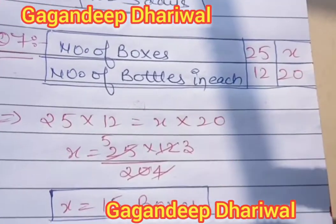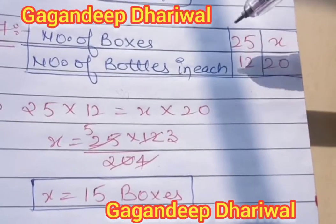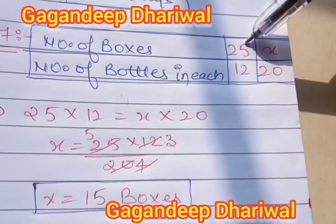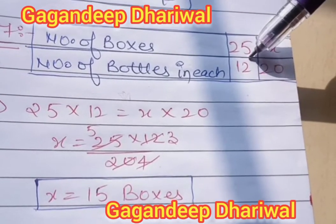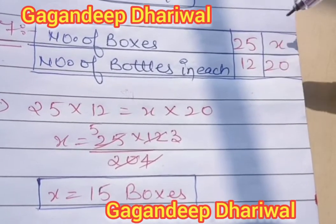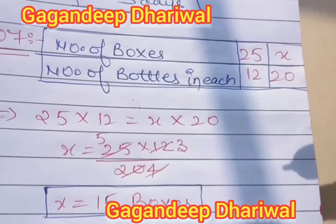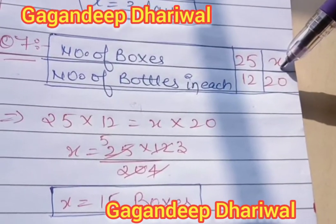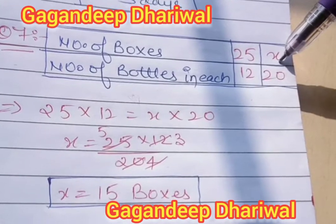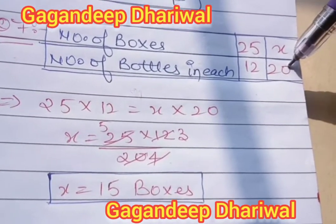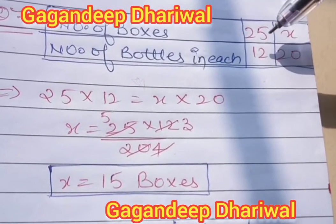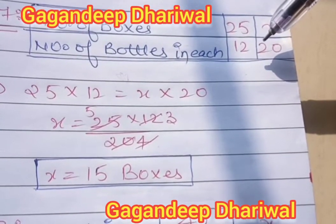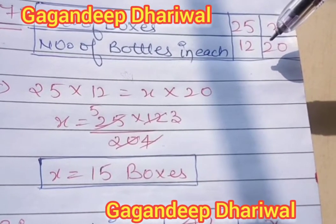Suppose the number of boxes is x. In the first case there are 25 boxes with 12 bottles each, and in the second case there are x number of boxes with 20 bottles each. This is an indirect proportion because if the number of boxes increases, the number of bottles in each box decreases, and vice versa.